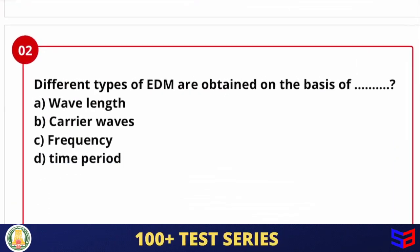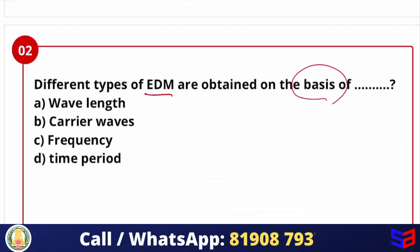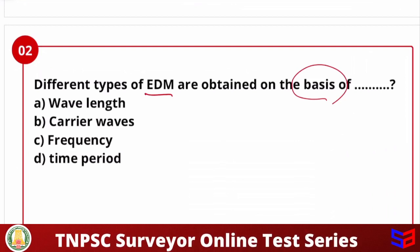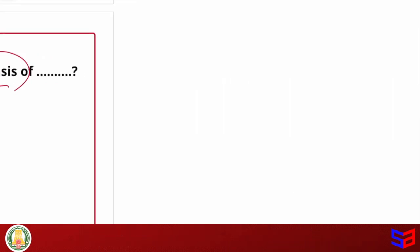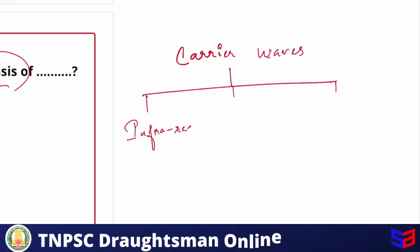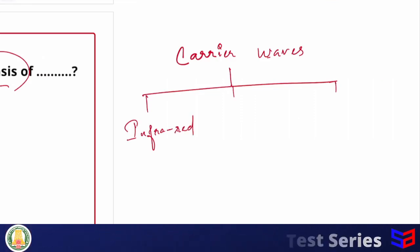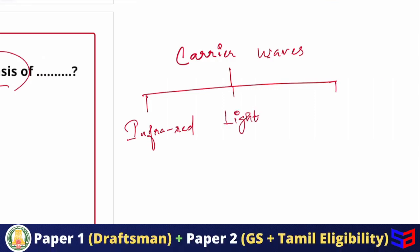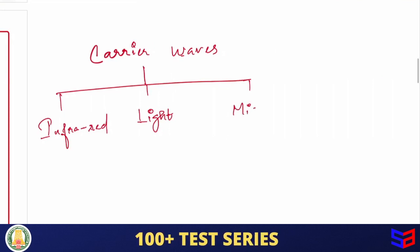So next question. Different types of EDM are obtained on the basis of what? So EDM classify based on what? Wavelength, carrier waves, frequency or time period. So mostly EDM classified, it depends on carrier waves. What wave is sent, how it propagates. So based on carrier wave, we have three types of EDMs. Suppose we use infrared to propagate and send, that is infrared EDM. And light waves propagate, that is light wave. Then we have microwave.